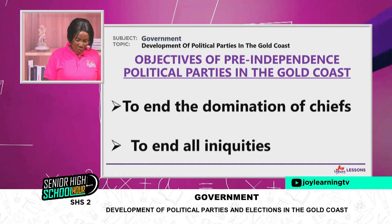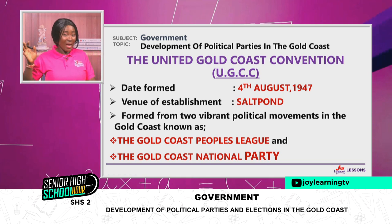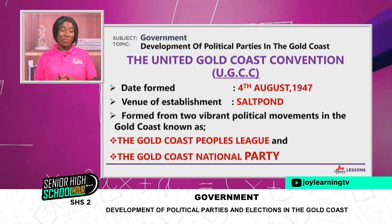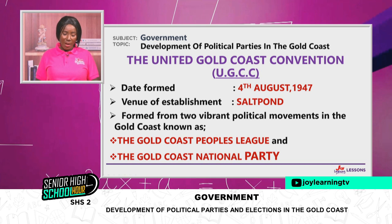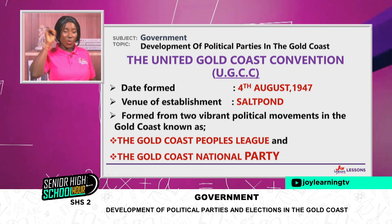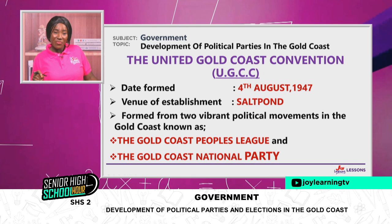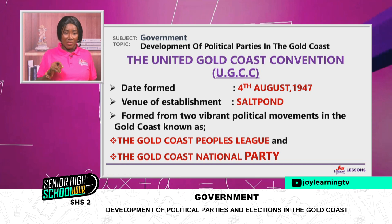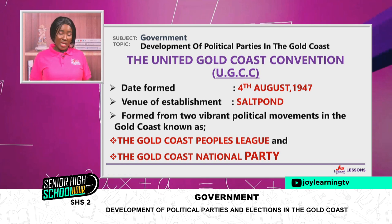The first or premier political party in the Gold Coast was the United Gold Coast Convention — the UGCC. It was formed on the 4th of August 1947. We see this was right after the Alam Ban's constitution of 1946. On the 4th of August, the UGCC was formed. It was formed in Salt Pond.